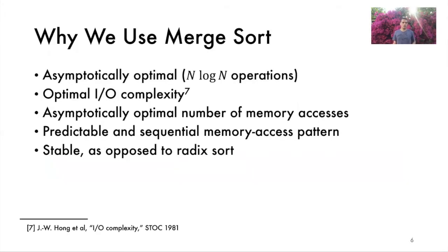Let's discuss how Bonsai achieves this. First of all, Bonsai uses Merge Sort because it's asymptotically optimal both in terms of the number of compute and IO operations. Additionally, it has predictable and sequential memory access patterns. And finally, Merge Sort is a stable sorting algorithm.